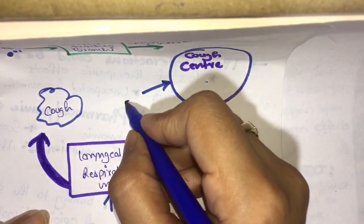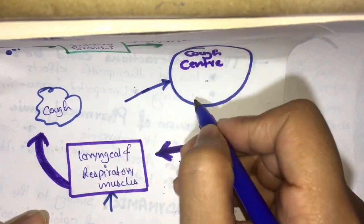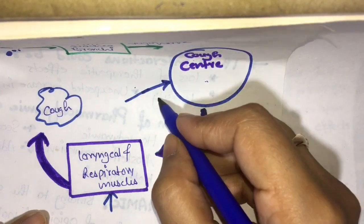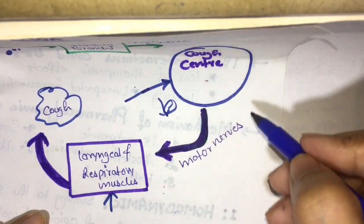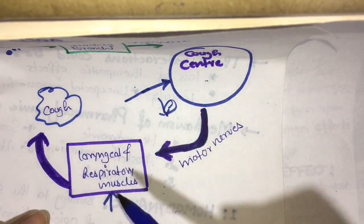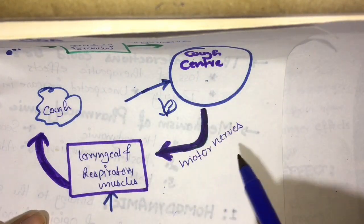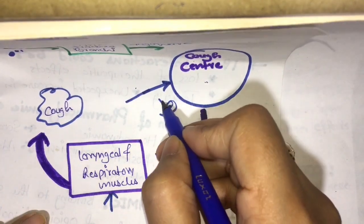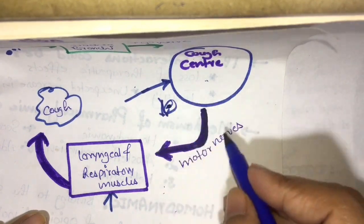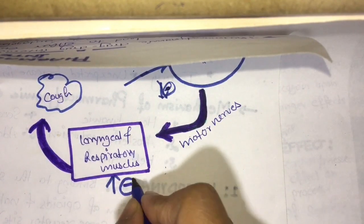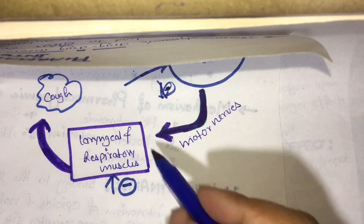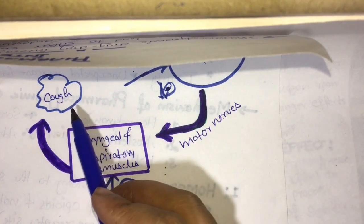When antitussives act on the central nervous system, they inhibit the cough center impulse, which stops the production of the cough.